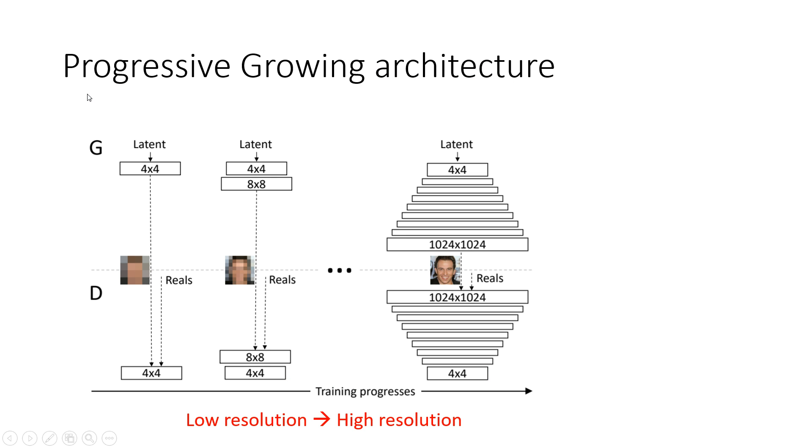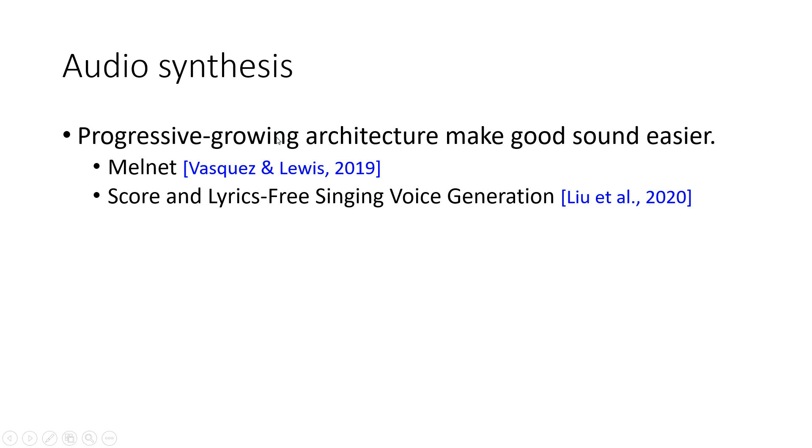Second, we want to introduce the progressive growing architecture. The basic idea is we generate the low resolution image first, and the generation of high resolution image is based on the low resolution one. For example, if we want to generate a real image, we first generate a 4x4 pixel image, then generate an 8x8 image. The generation of the 8x8 image is based on the 4x4, and so on. This architecture is also very useful in audio synthesis. It is shown in MelNet and singing voice generation.